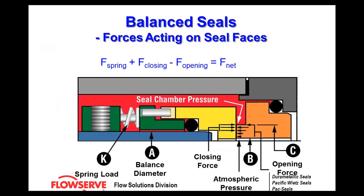Here's the orientation of a balanced seal. Following the spring at point K, you'll notice that the inline force of the spring is above where the actual mechanical seal faces touch. This region in blue, as it interacts with the yellow seal faces, is referred to as the balanced shoulder. So: if you see the springs in line with the face, you have an unbalanced seal; if you see the springs above the face, you have a balanced seal.